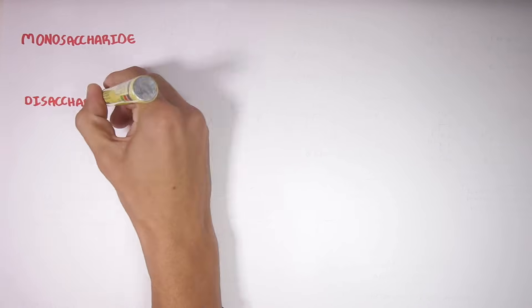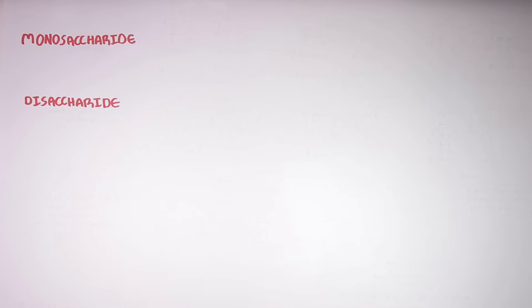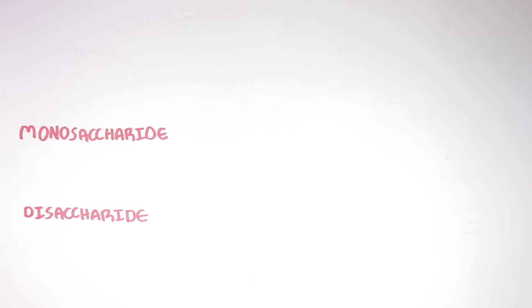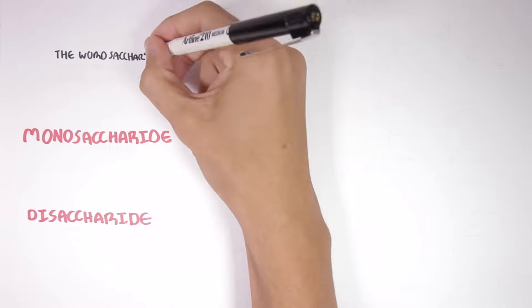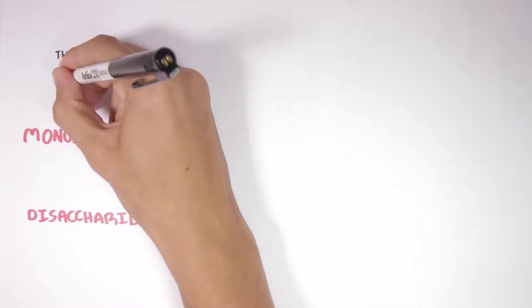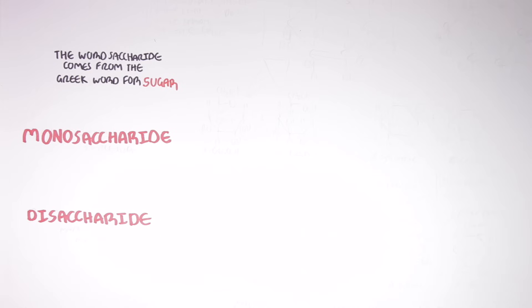Carbohydrates can be divided into four types: monosaccharides, disaccharides, oligosaccharides, and polysaccharides. The word saccharide is derived from the Greek word for sugar. Now let us look at each of these types of carbohydrates and learn a bit more about their structure and how they are formed.